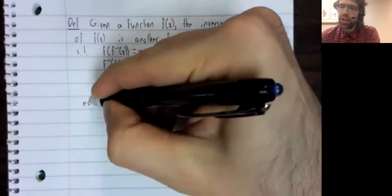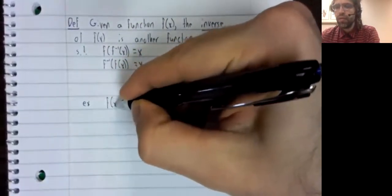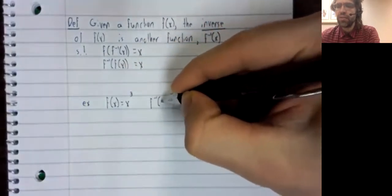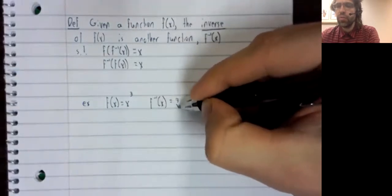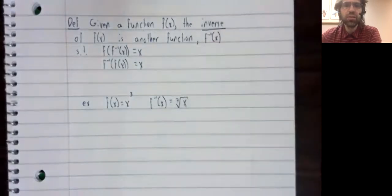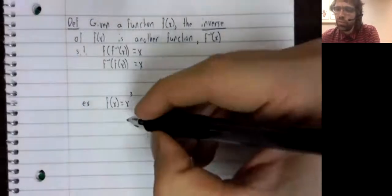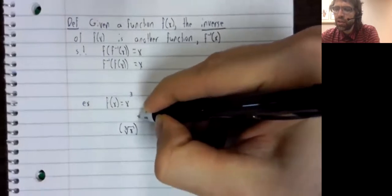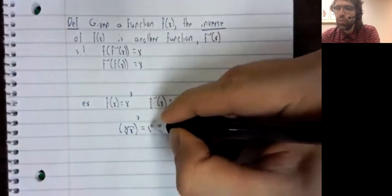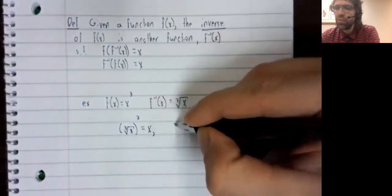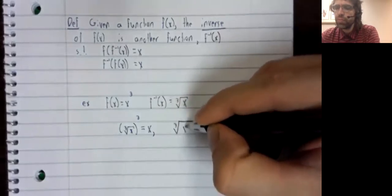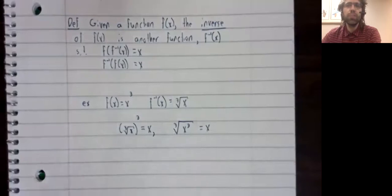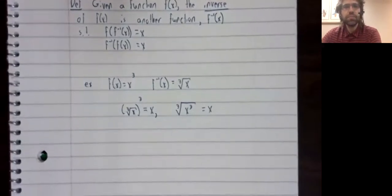For example, f of x equals x cubed has as its inverse the cube root of x. Because if you compose these in either direction, the cube root cubed equals x, and the cube root of x cubed also equals x.